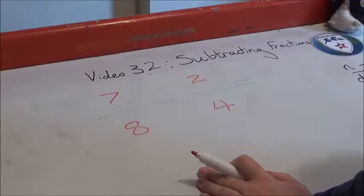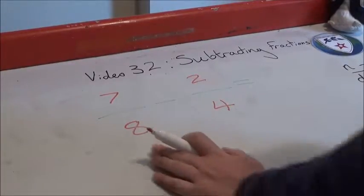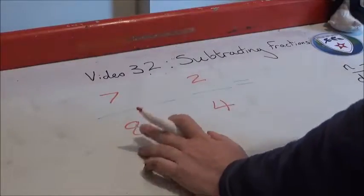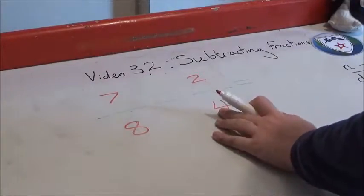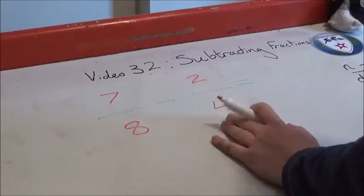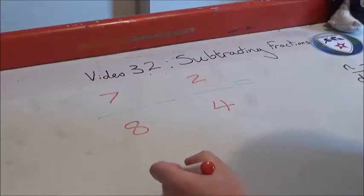Now, similarly with adding fractions, when we have two different denominators, we need to find a common denominator. So let's do that. First of all, we're looking at eight and four. Probably easier to turn this four into an eight so we have a common denominator.